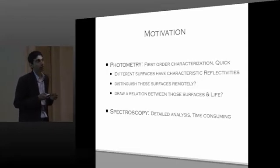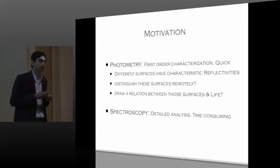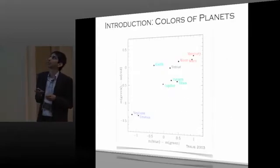Colors have often been used, color-color diagrams have often been used in galaxy astrophysics, for instance, to differentiate the different kinds of galaxies, be it elliptical or spiral galaxies. Also in stellar astrophysics to differentiate the different types of stars. One can actually do this for planets as well.